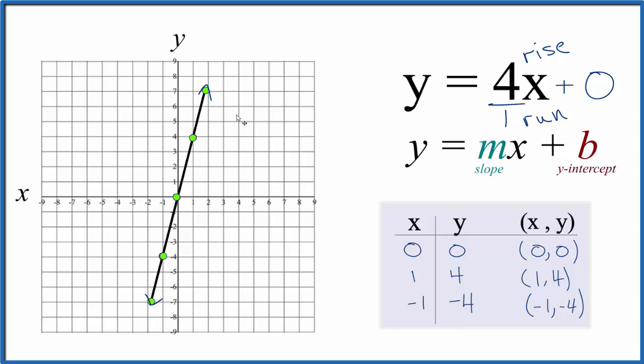So this is the graph for y equals 4x. We've done it by plugging points in and graphing them, and then we've checked our work with the slope-intercept formula. This is Dr. B and thanks for watching.